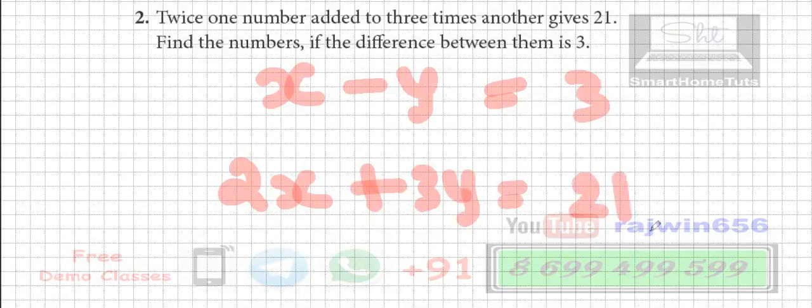2x minus 3y goes to 3. Why minus 3y? Because the difference is 3.